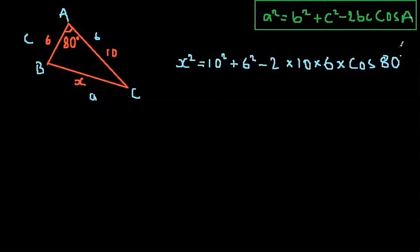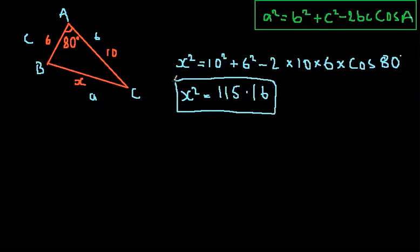Okay, so, we've just put that all into the formula. And you just use your calculator here, and you should end up with x² = 115.16. And obviously this is not our final answer, because we can't have a length that long anyway. And we have x² here. So, don't just stop at this stage.